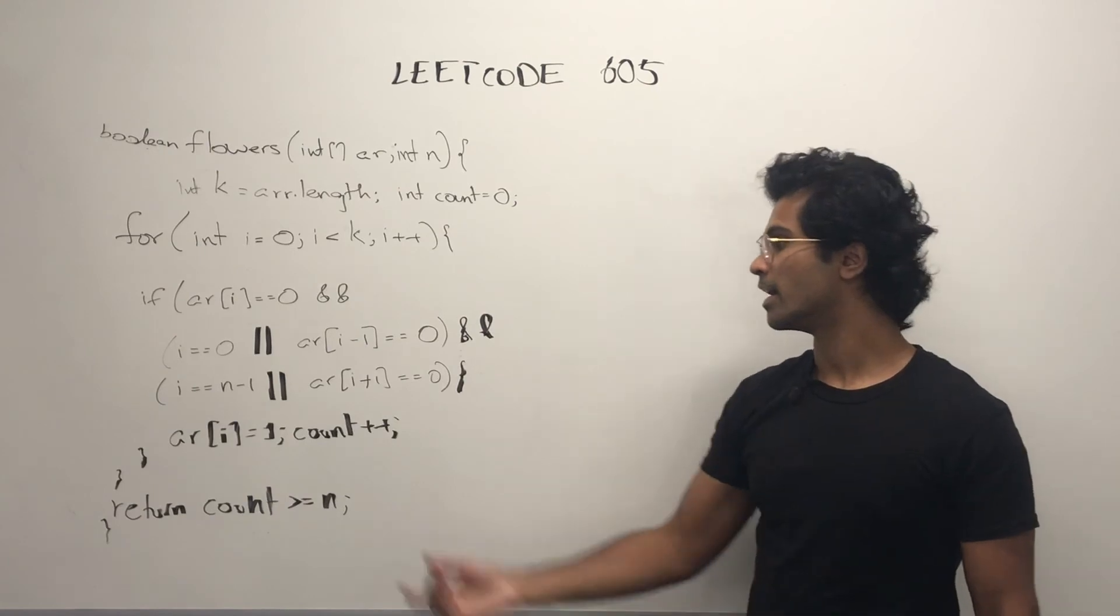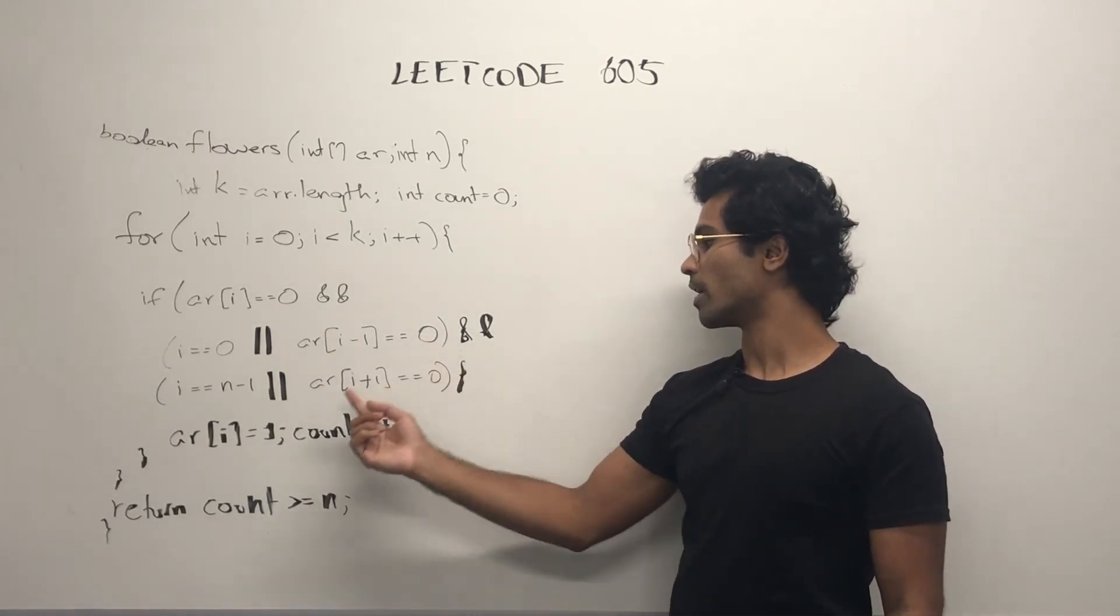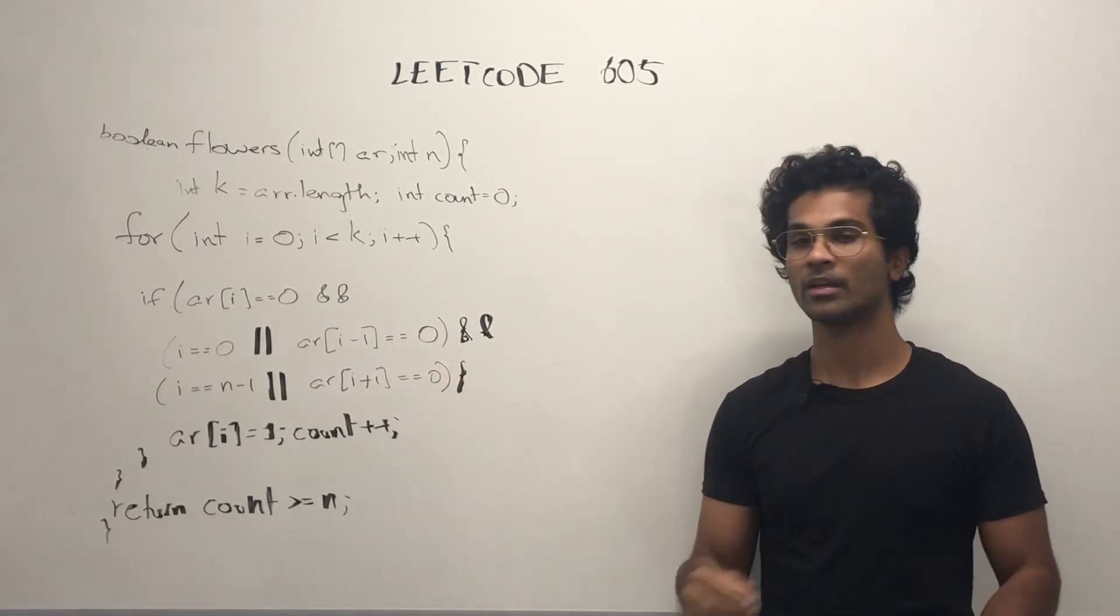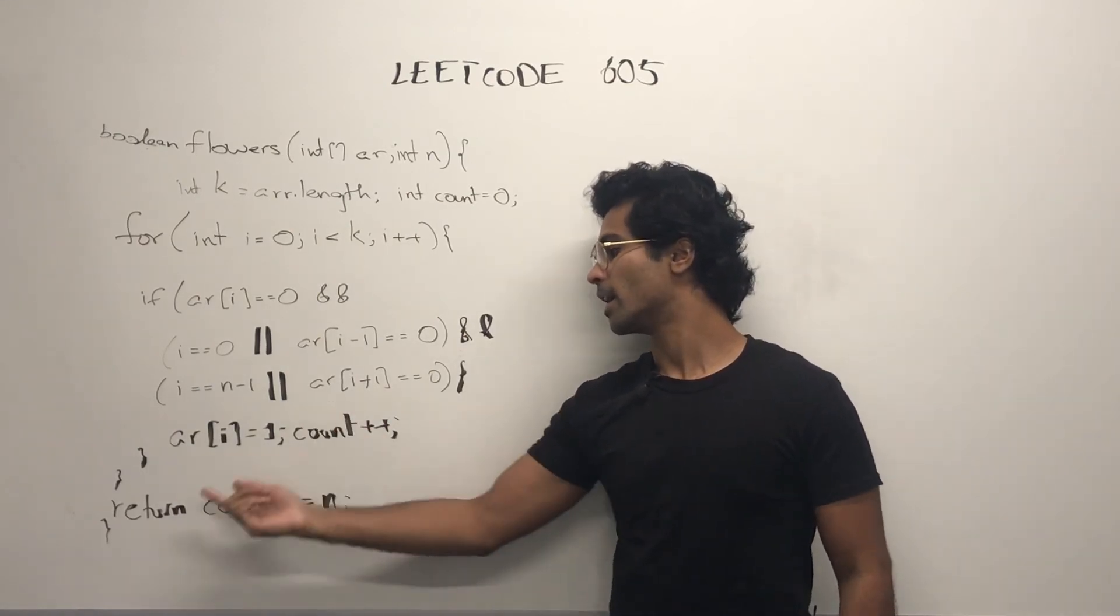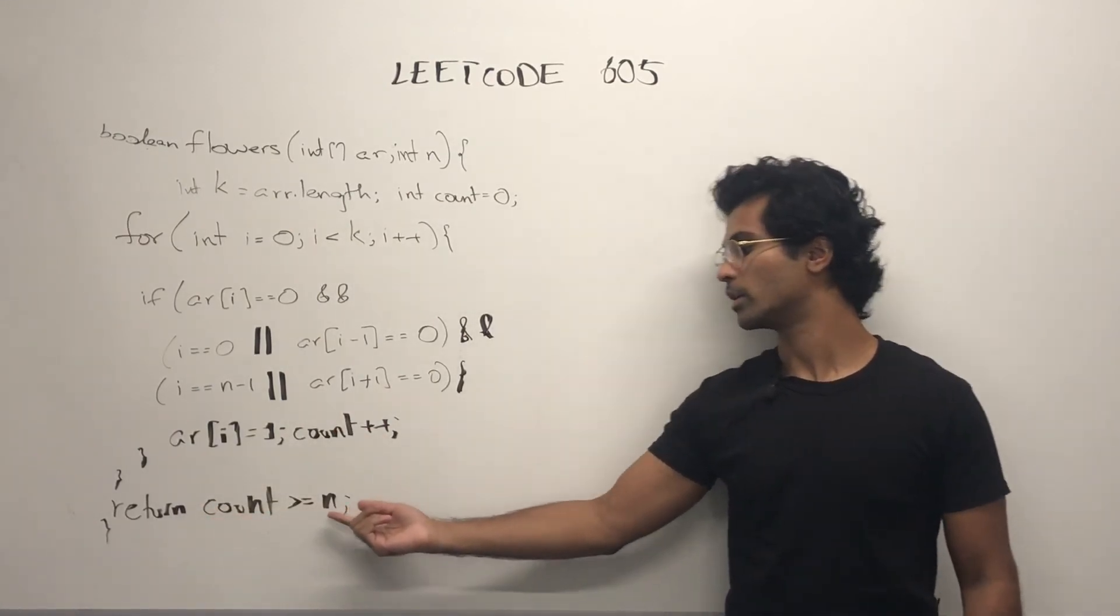Otherwise, all we need is ar of i-1 is equal to 0, ar of i plus 1 is equal to 0. If so, we place a flower, increment the count, and return if count is greater than or equal to n.